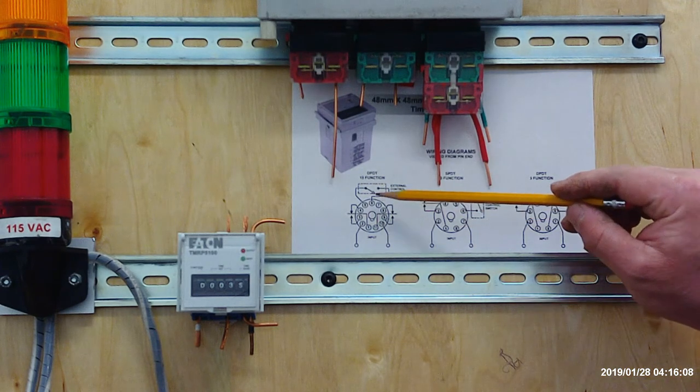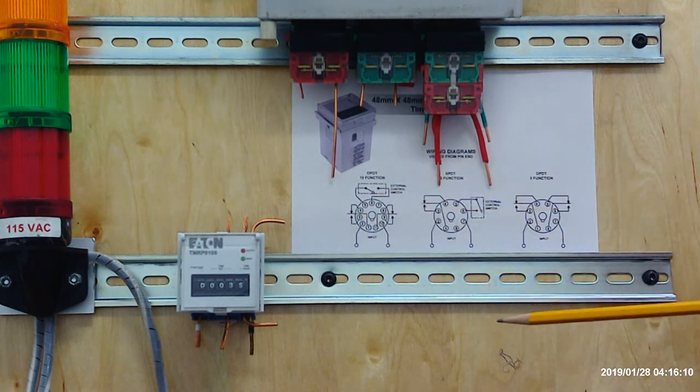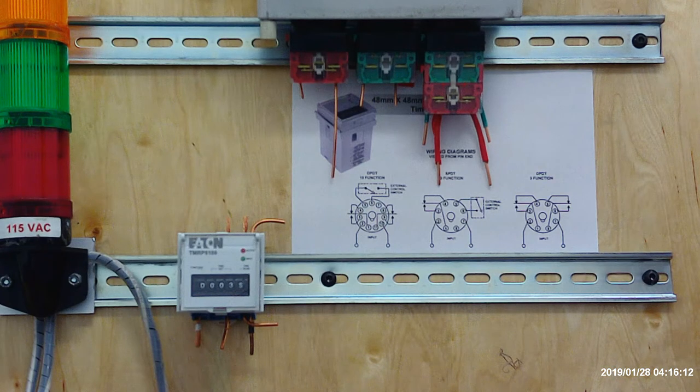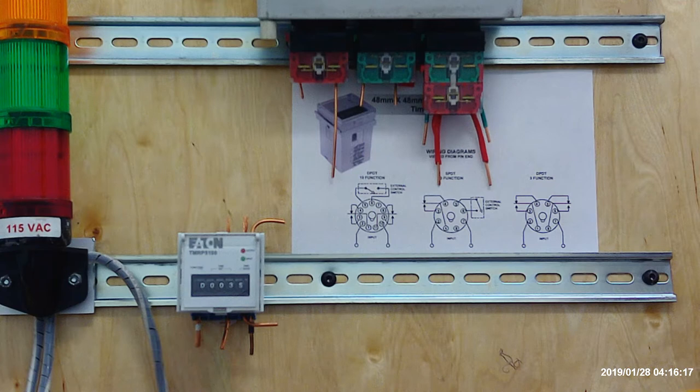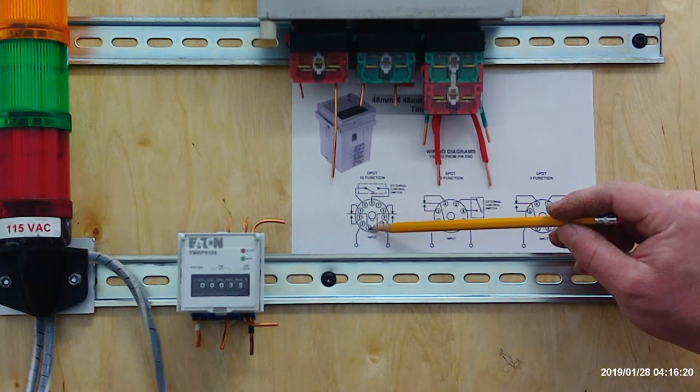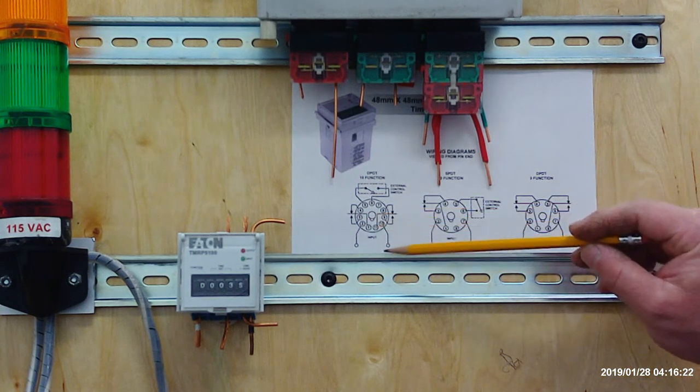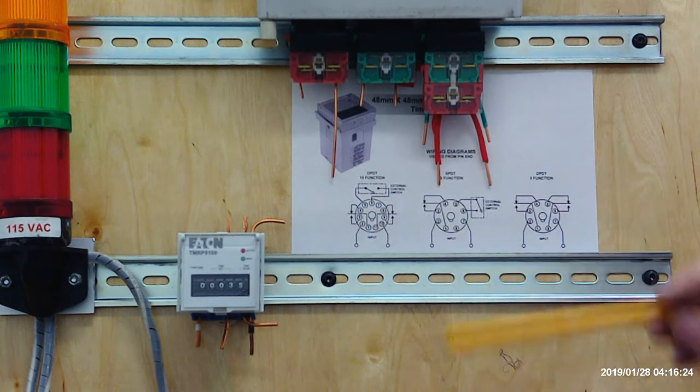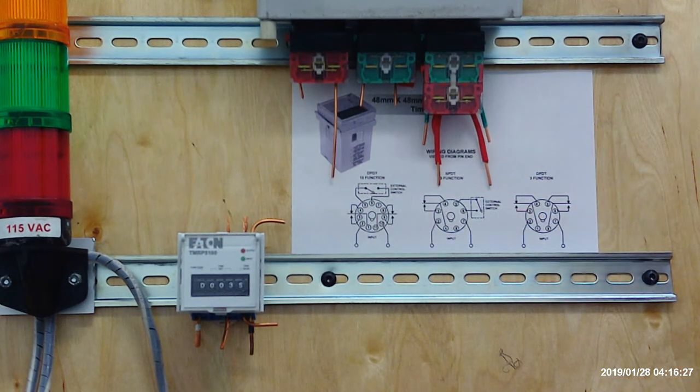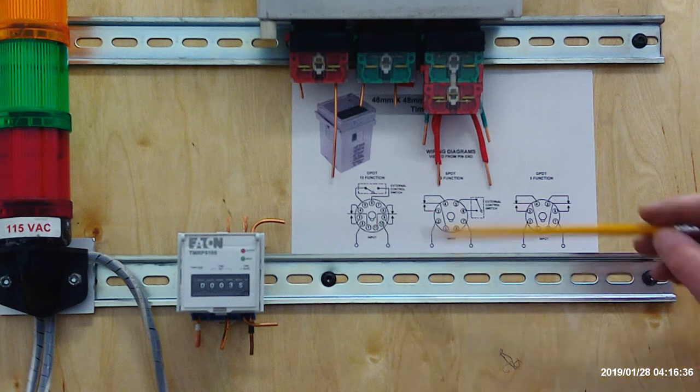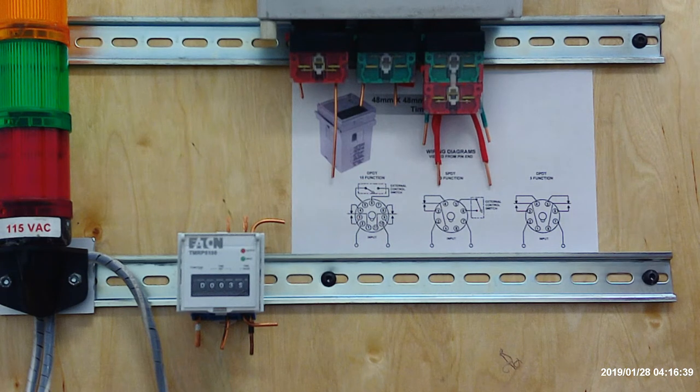Well how does this thing work? You have an external control switch that once you close the circuit and provide energy, it'll actually alter the state, closing from the one to the three and then opening the contacts from the one to the four. The important difference between the off-delay timer versus the on-delay timer: the off-delay timer doesn't start timing until you open up the external control switch.